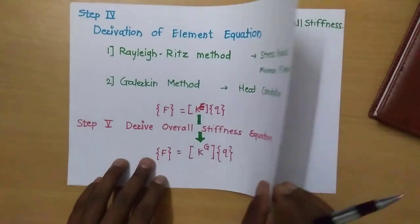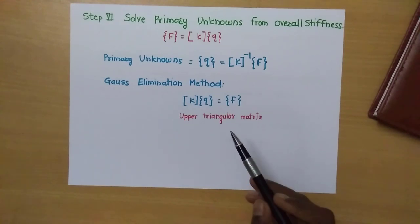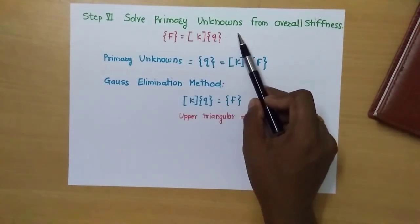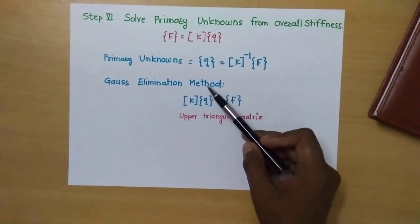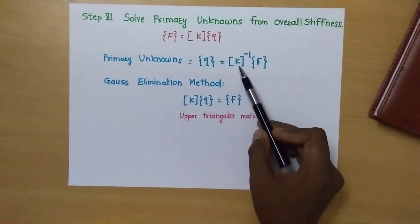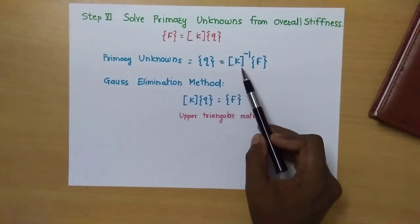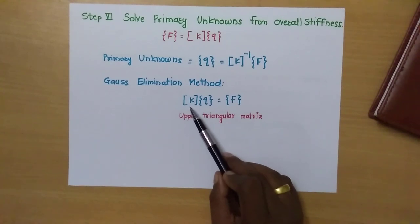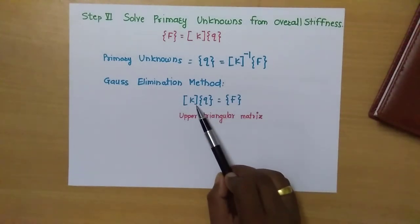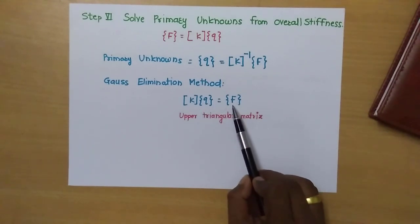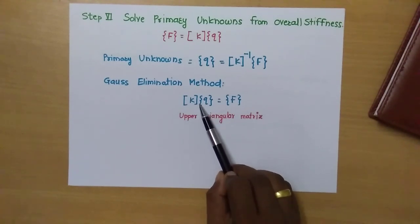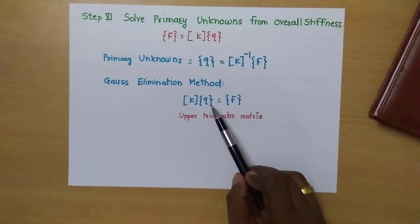Step six involves solving the system equations. Once we have the overall system equation — force equals stiffness times displacement — we solve it to find the primary unknowns. Q is the primary unknown. We can take the inverse of the stiffness matrix K and multiply by the force vector to get displacements directly, or we can use Gauss elimination. In Gauss elimination, the stiffness matrix is converted to an upper triangular matrix and solved step by step to get each displacement value. Once all primary unknowns are found, we use known relationships to derive the secondary unknowns.